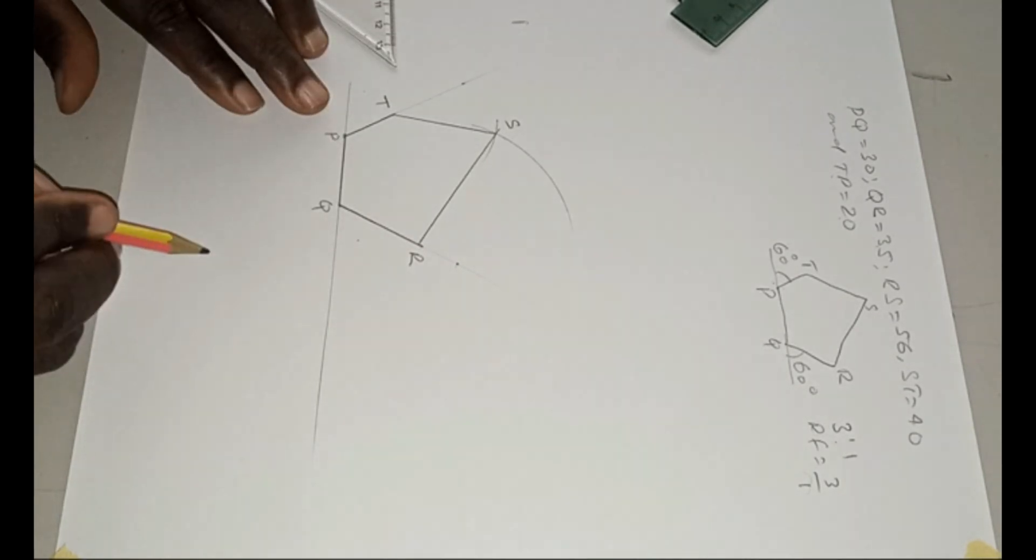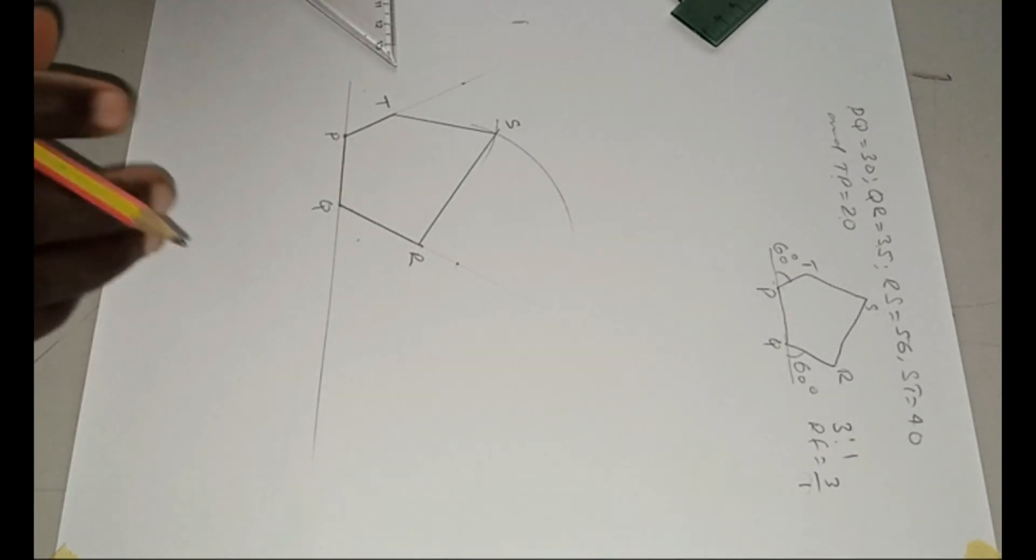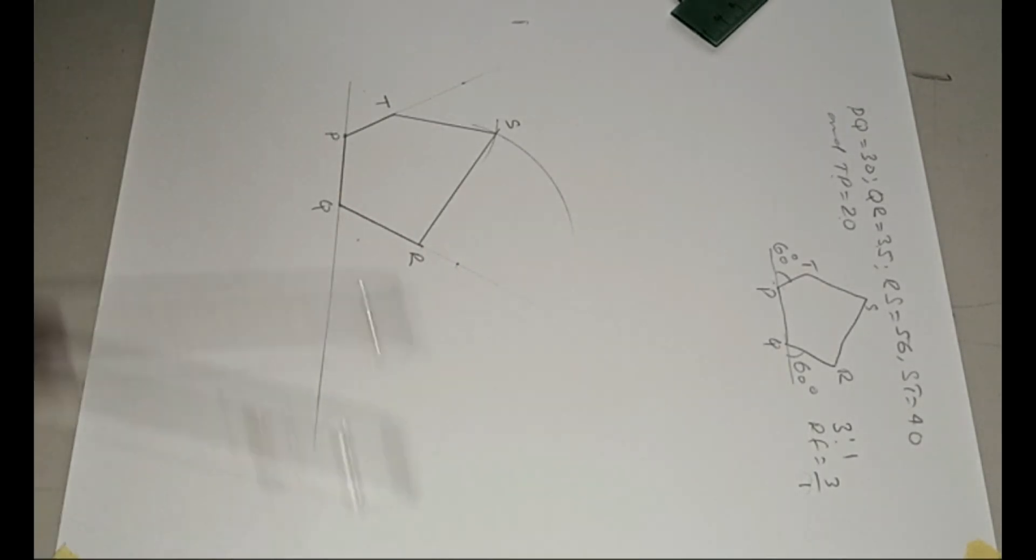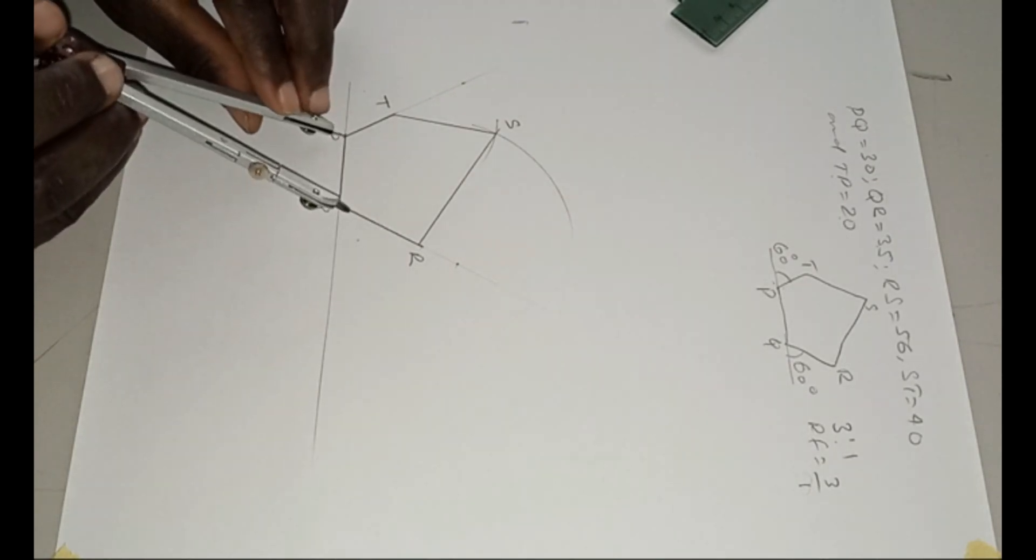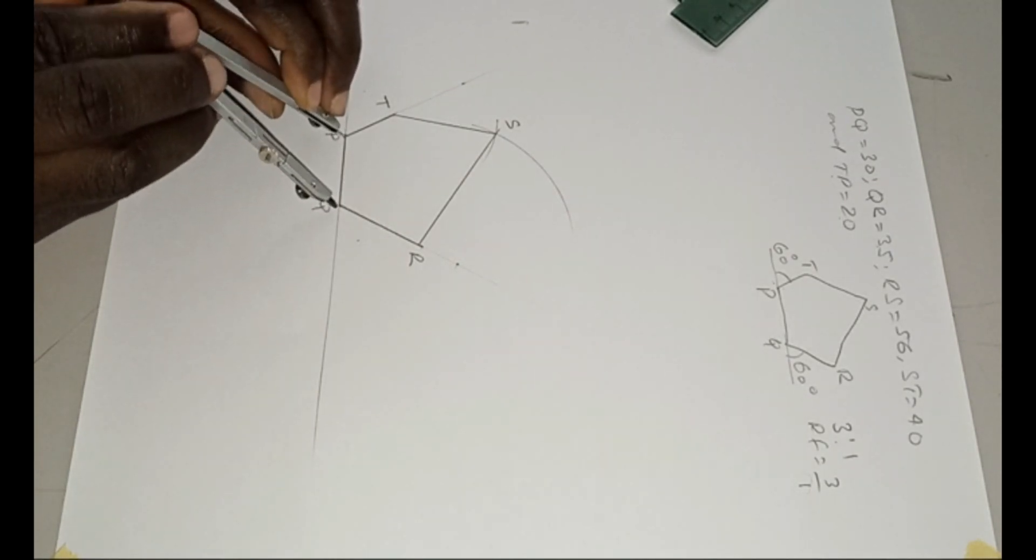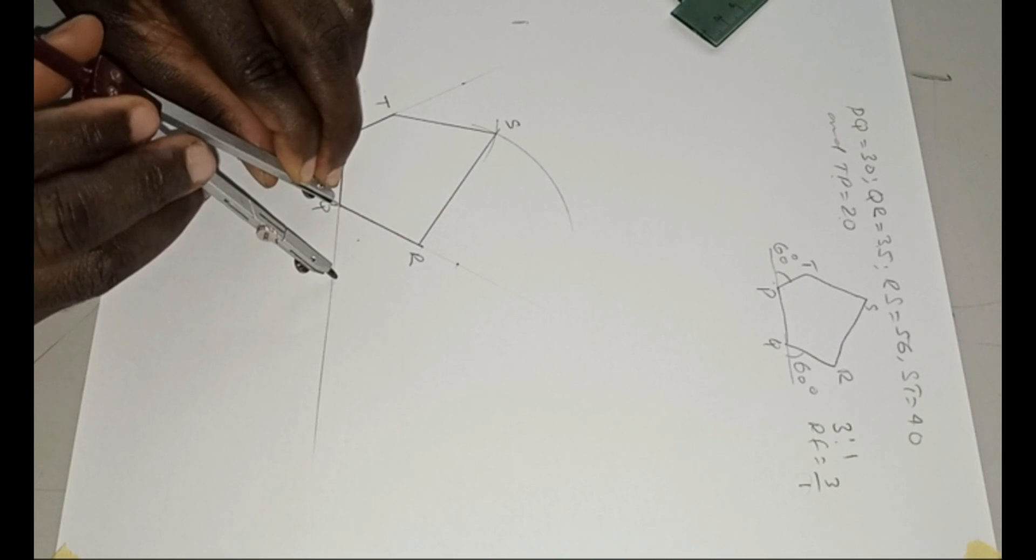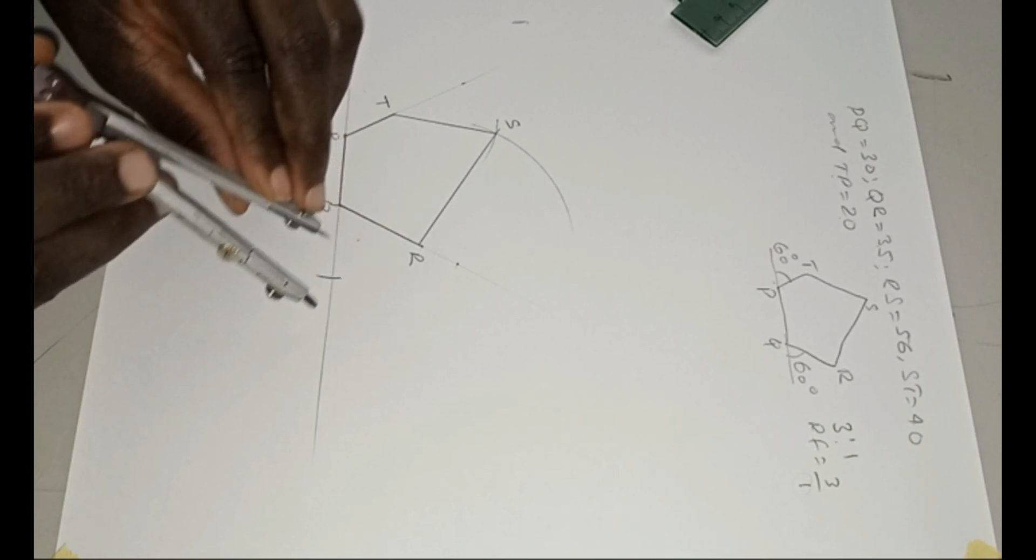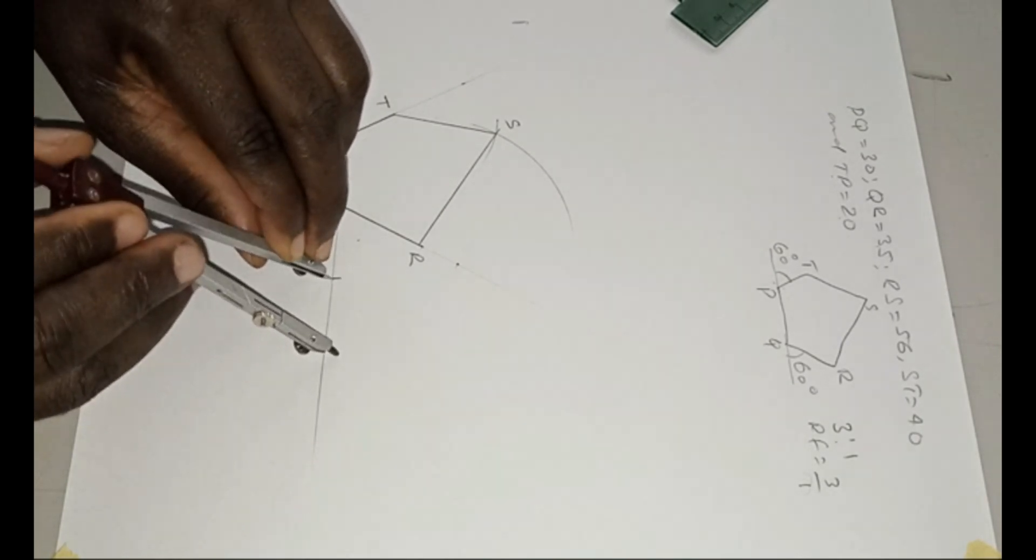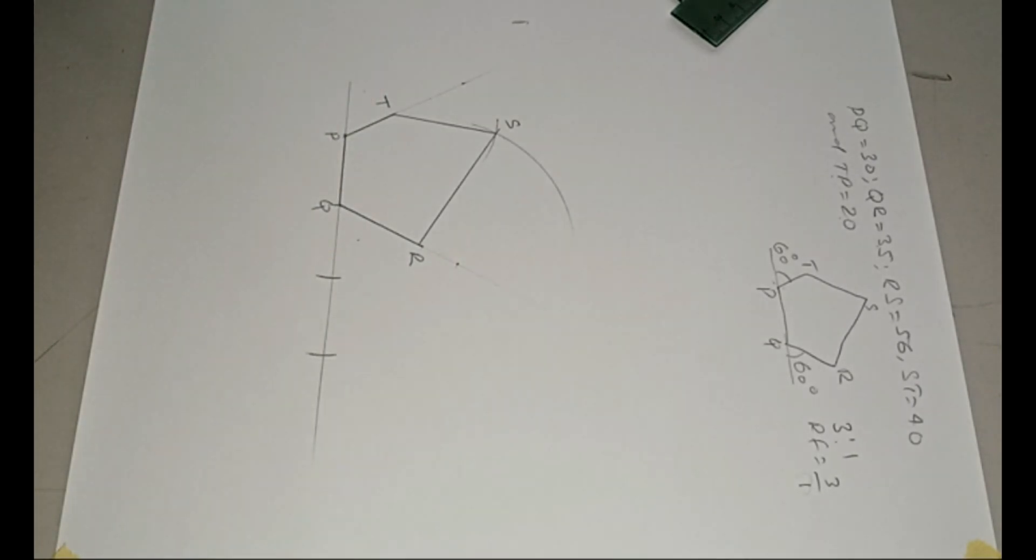So this is very easy. You don't even need to draw any scale line. All you just need to do is to transfer this length of PQ. Because this PQ is the actual size, and you need two more to get to three times the size. So you have one here, and two here. And two here. So that will be three times the size.